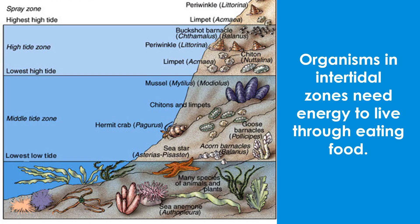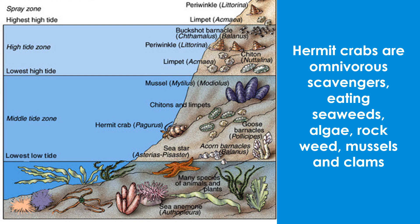Just like in estuaries, organisms in intertidal zones need energy to live through eating food. Let us analyze the figure and observe the different organisms and imagine how they interact and get energy. Hermit crabs are omnivorous scavengers, eating seaweeds, algae, rockweed, mussels, and clams.